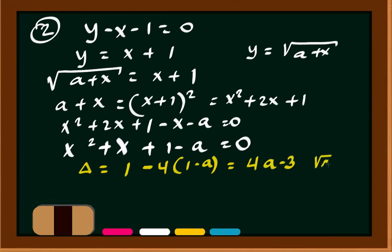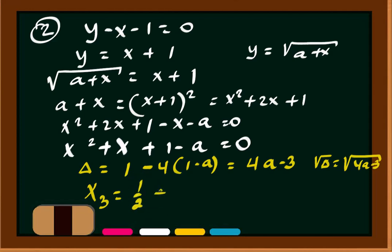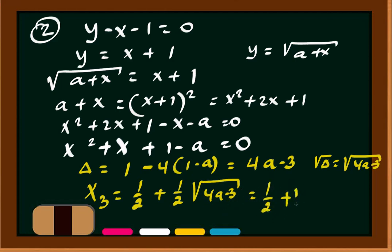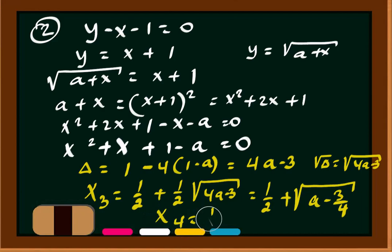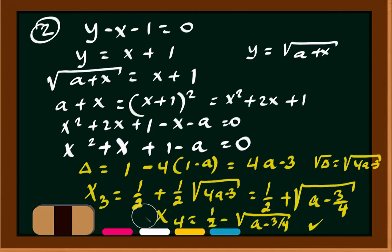Now we find the third and fourth roots. x3 equals negative one half plus square root of (4a minus 3) over 2, which is negative one half plus square root of (a minus three quarters). And x4 equals negative one half minus square root of (a minus three quarters). That's the solution — thank you for watching and see you in the next video, bye.